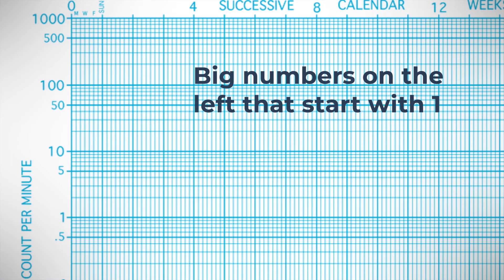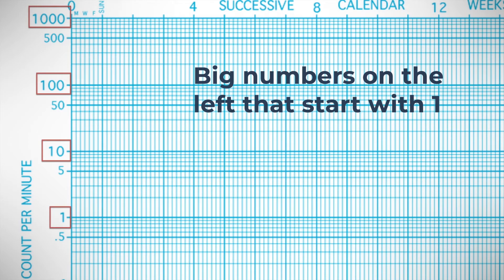Here's the little ditty that I like to use. I think it originally came from Michael Maloney. Big numbers on the left that start with one tell us what to count by and where to count from. If we have a data point falling right here, we know that that's one per minute, but if we go to the next line, how do we read that?